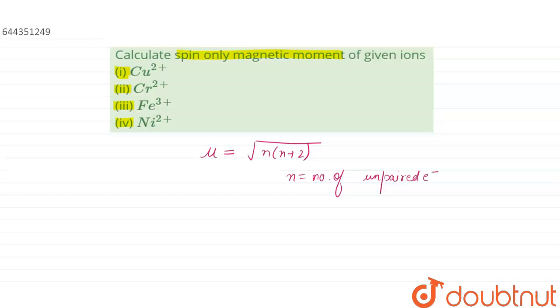Let us calculate firstly for Cu²⁺. We know that copper has atomic number equals to 29 and its electronic configuration is [Ar]₁₈ 3d⁹ 4s².